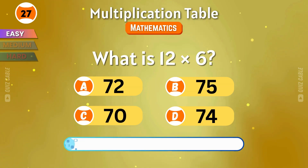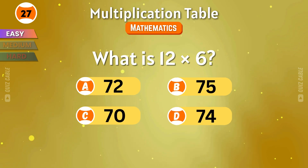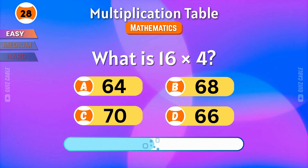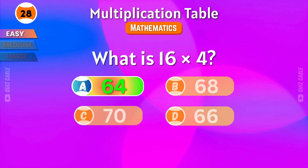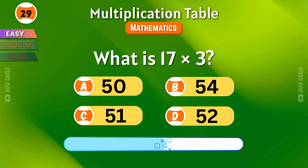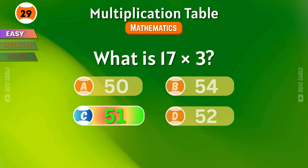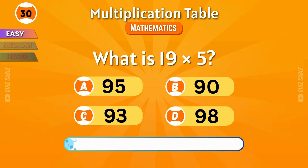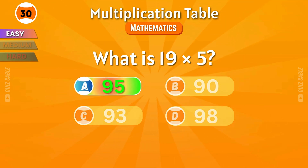What is 12 times 6? That's 72. What is 16 times 4? The result is 64. What is 17 times 3? That makes 51. What is 19 times 5? Yes — 95.